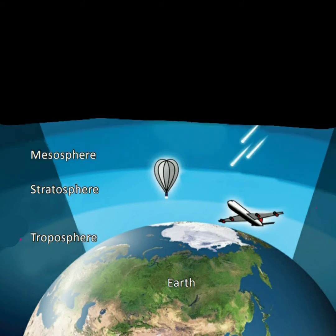Then we have the third layer. Just above the stratosphere is the mesosphere. Meteoroids burn out in this layer so that they do not crash into the earth's surface. Meteoroids are small rocks that move in space. So the atmosphere also protects us from meteoroids.